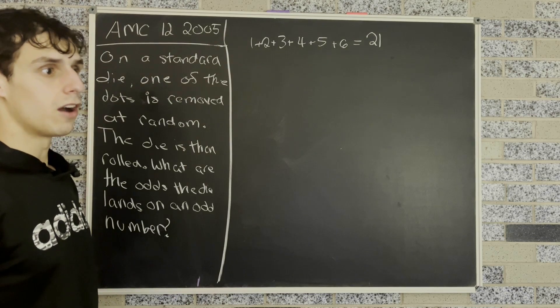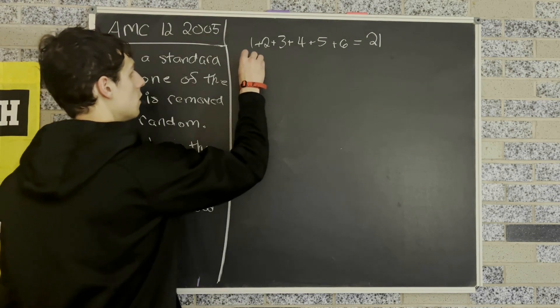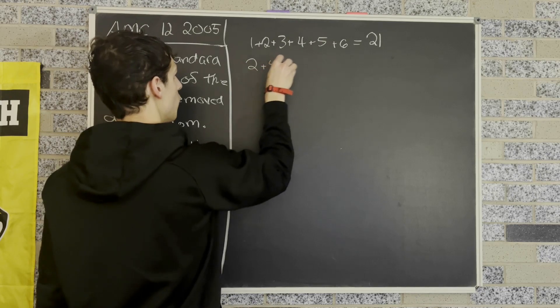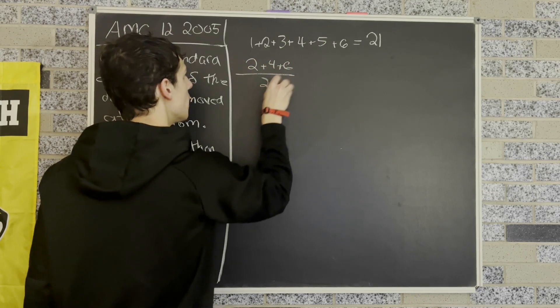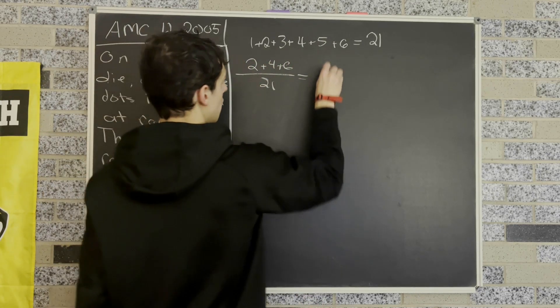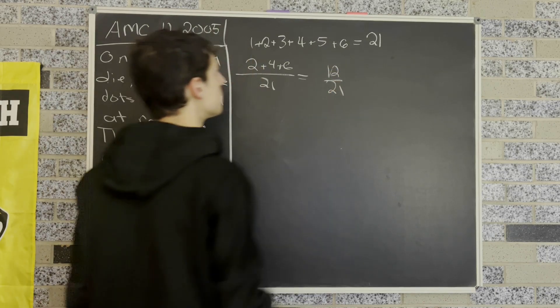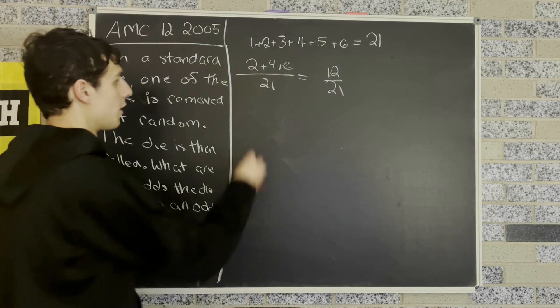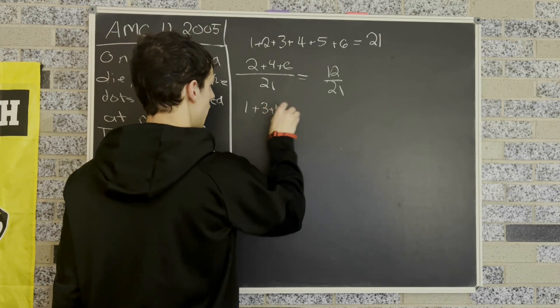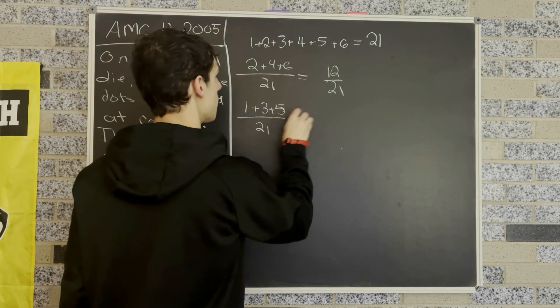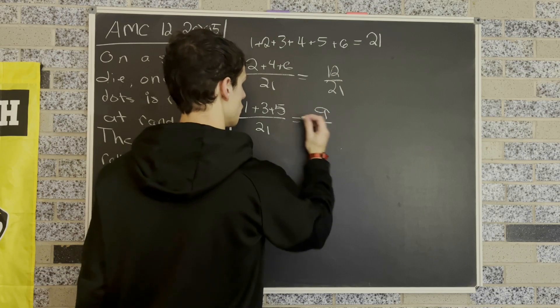So to find the odds that a dot from an even number is removed, we do 2 plus 4 plus 6 over 21, and that's going to be equal to 12 over 21. And then similarly, for the odd numbers, we know that that's going to be 1 plus 3 plus 5 over 21, and that's going to be equal to 9 over 21.